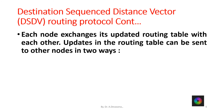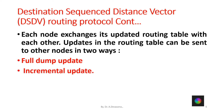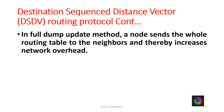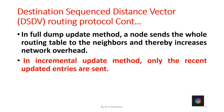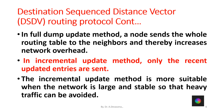Each node exchanges its updated routing table with each other. Updates in the routing table can be sent to other nodes in two ways. First, in a full dump update, the information has to be updated. Second, in the incremental update, the information has to be updated. In the full dump update method, the whole routing table is sent to the neighbors, thereby increasing network overhead. The incremental update method is more suitable when the network is large and stable, so that heavy traffic can be avoided.